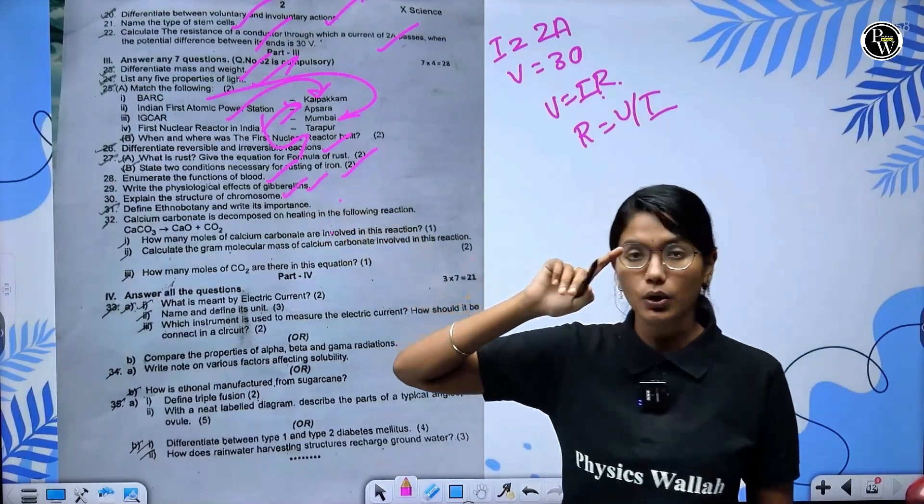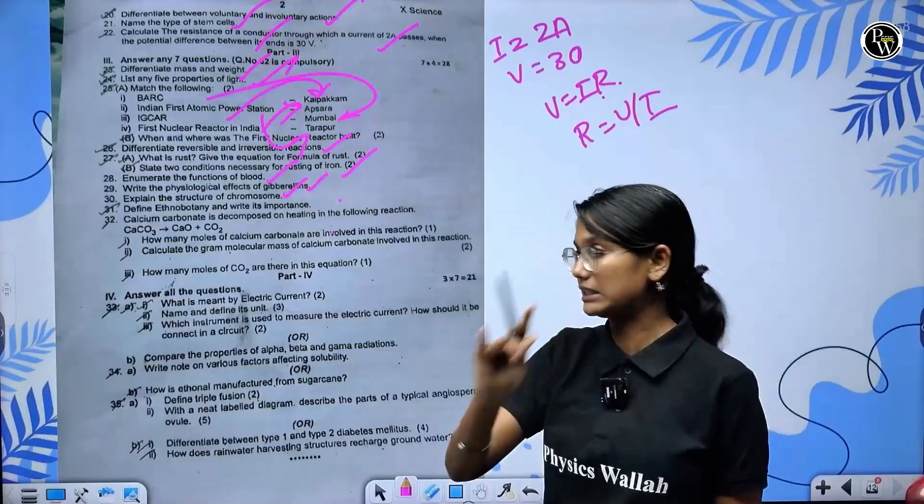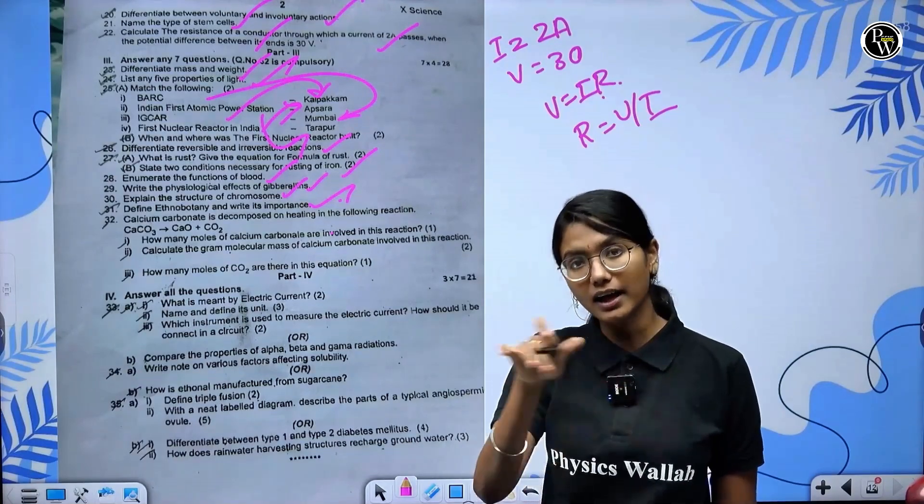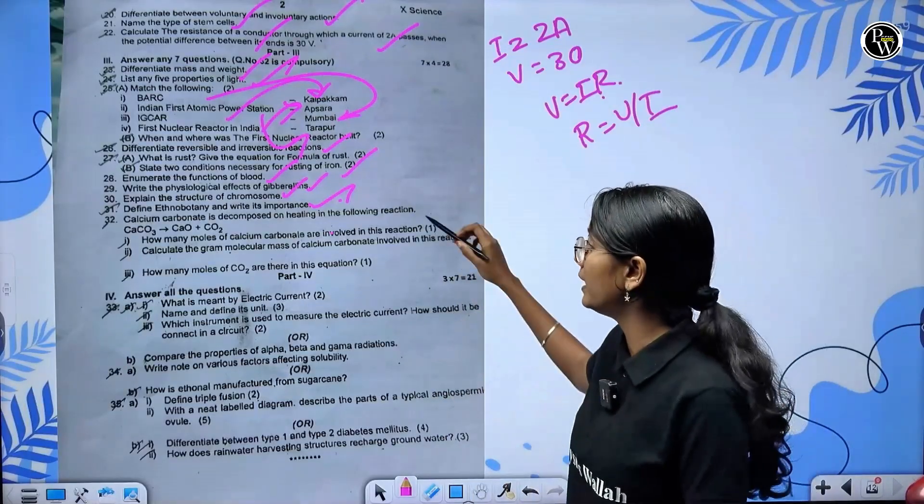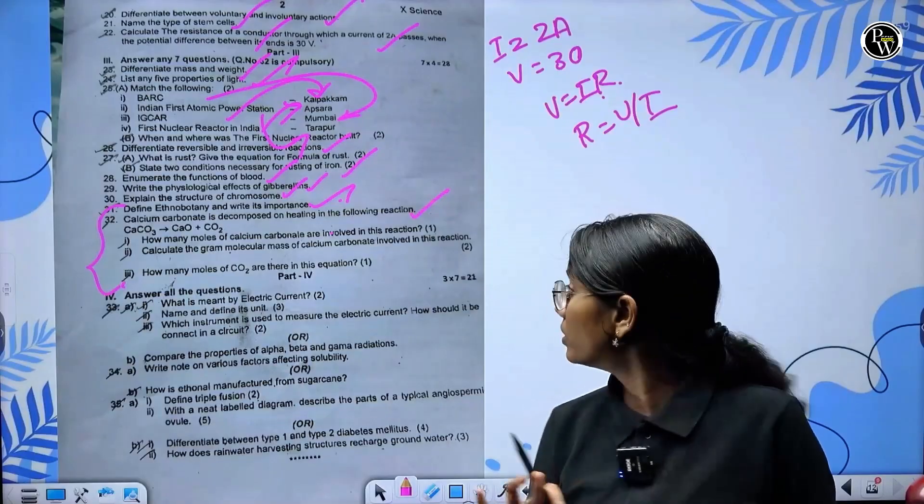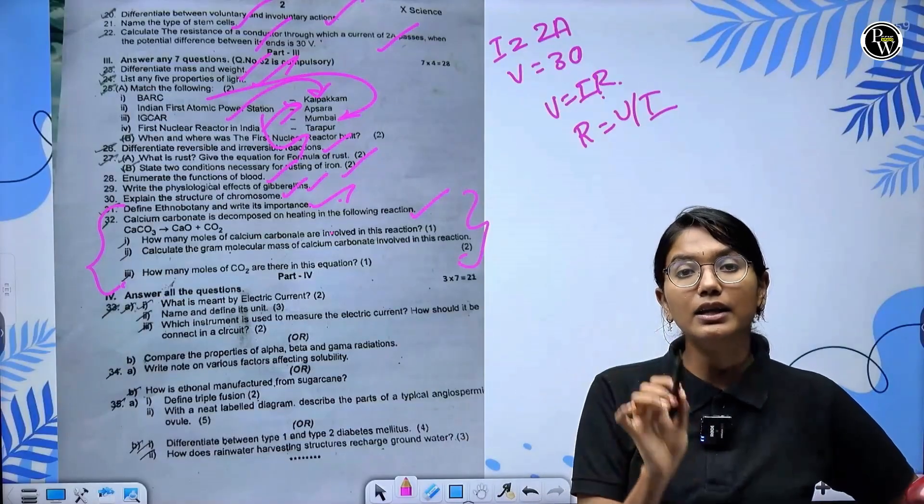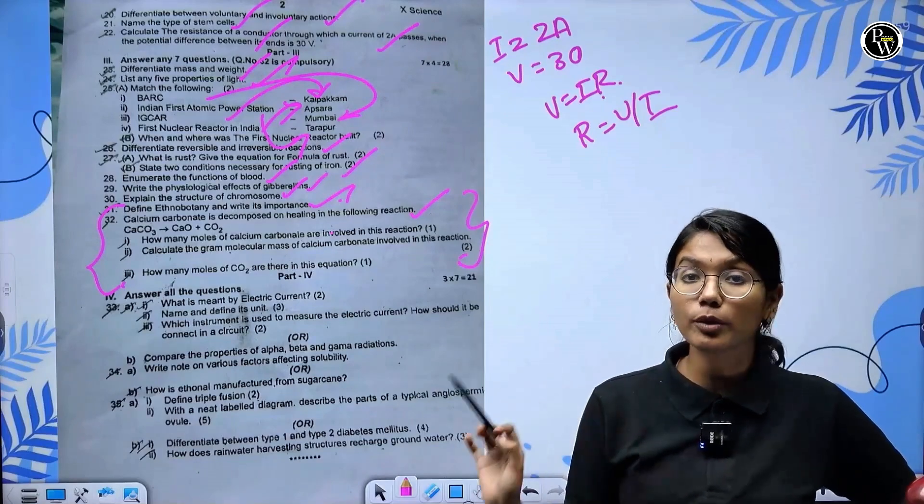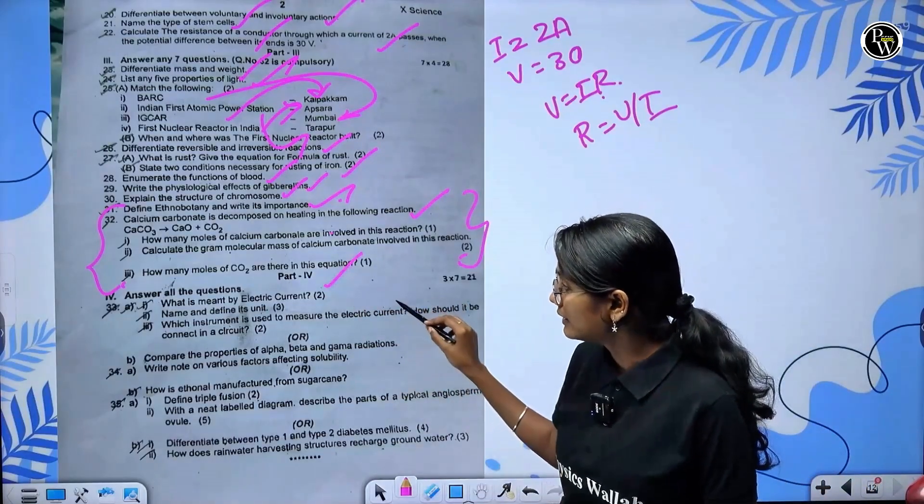Physiological effects of gibberellin in plant hormones - this question is very repeated. Structure of chromosome and types of chromosome - telocentric, mesocentric. This is for four marks. Ethnobotany and calcium carbonate.